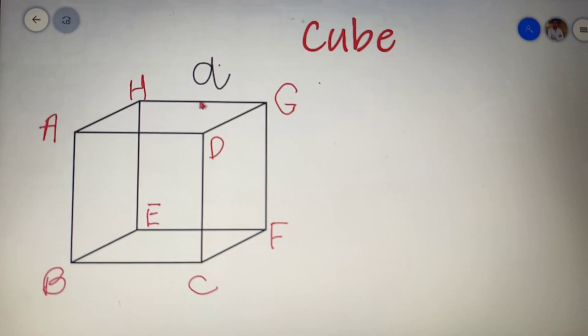If we know the length of the side of the cube, then to find the surface area of the cube is very simple. Since a cube is made up of 6 squares, I can say that the total surface area of a cube is equal to 6A².